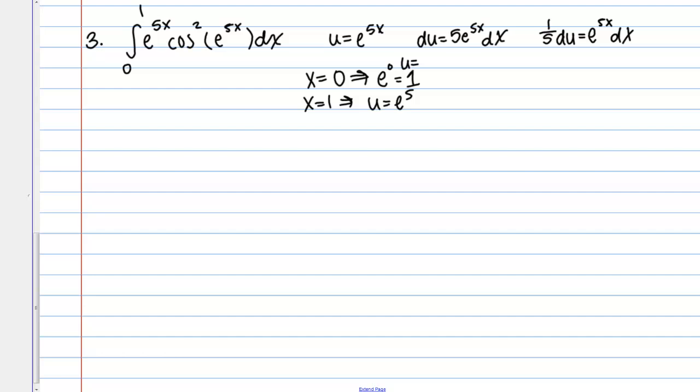So then my integral becomes the integral from 1 to e to the 5. I am letting, so this e to the 5x dx is 1 over 5 du, right? So I am going to go ahead and put that 1 over 5 out front. And then we will have our du, and then I am going to have cosine squared of u. This is my new integral, and everything is in terms of u.